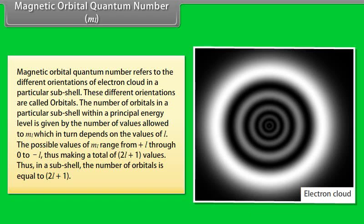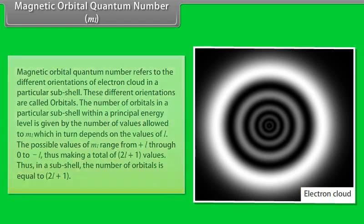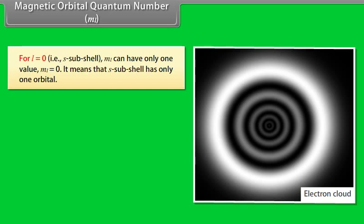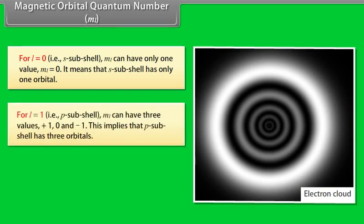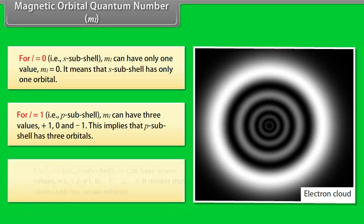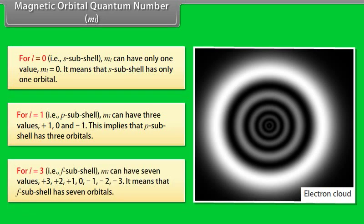Magnetic Orbital Quantum Number refers to the different orientations of electron cloud in a particular subshell. These different orientations are called orbitals. The number of orbitals in a subshell is given by the number of values allowed to ML, which depends on L. The possible values of ML range from +L through 0 to −L, making a total of 2L+1 values. For L=0, ML=0 (one orbital in S subshell). For L=1, ML = +1, 0, −1 (three orbitals in P subshell). For L=3, ML = +3, +2, +1, 0, −1, −2, −3 (seven orbitals, meaning F subshell has seven orbitals).